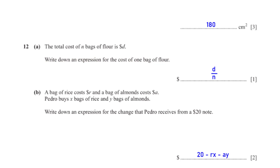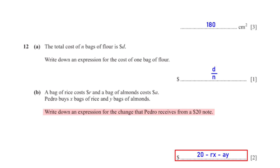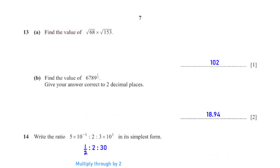A bag of rice costs r dollars and a bag of almonds costs a dollars. Pedro buys x bags of rice and y bags of almonds. Write down an expression for the change Pedro receives from a $20 note. The change equals 20 minus xr minus ya dollars.